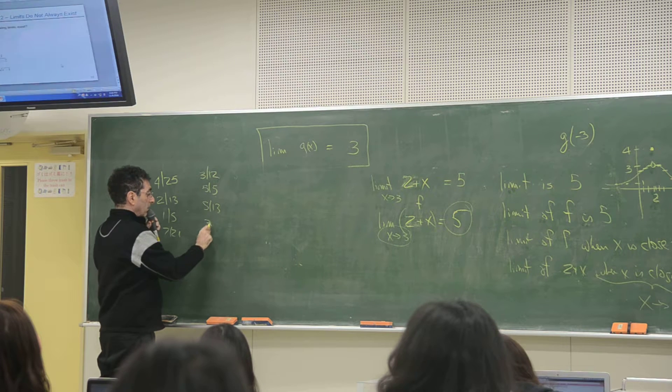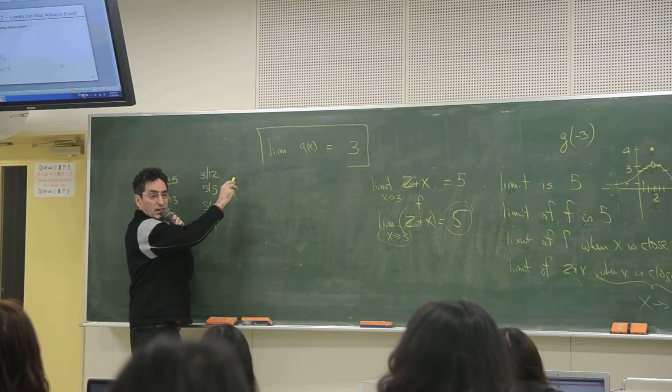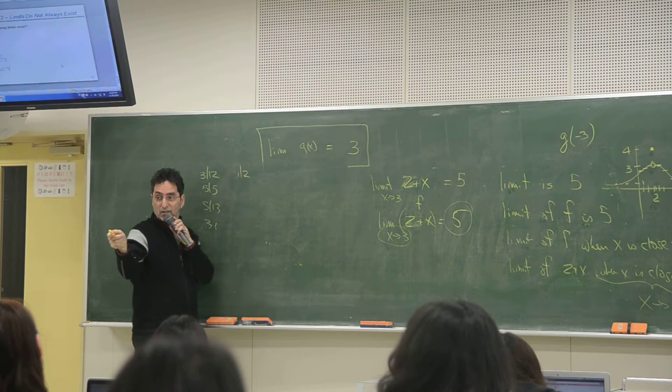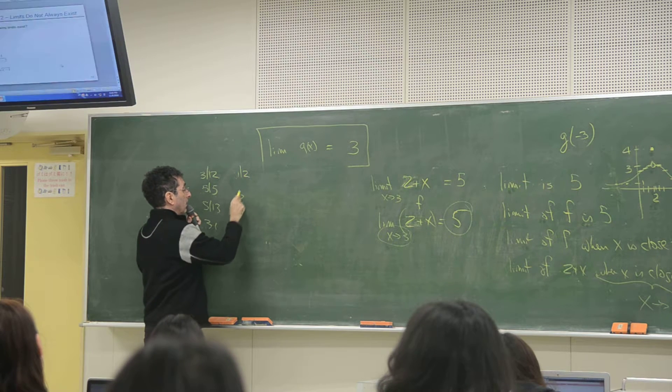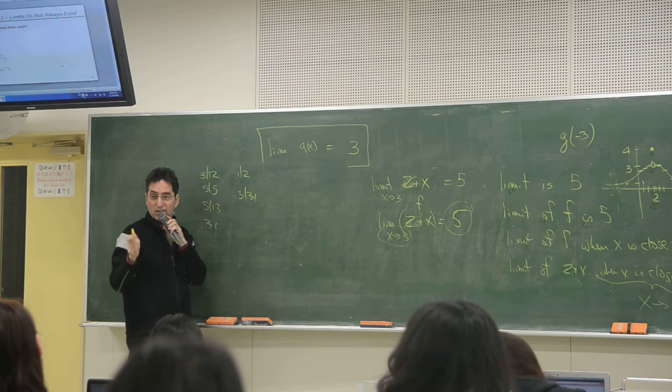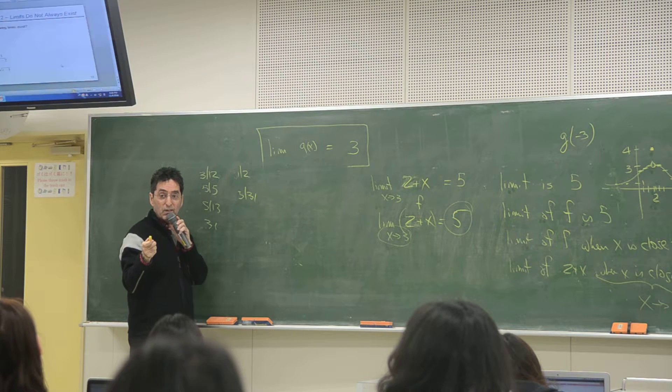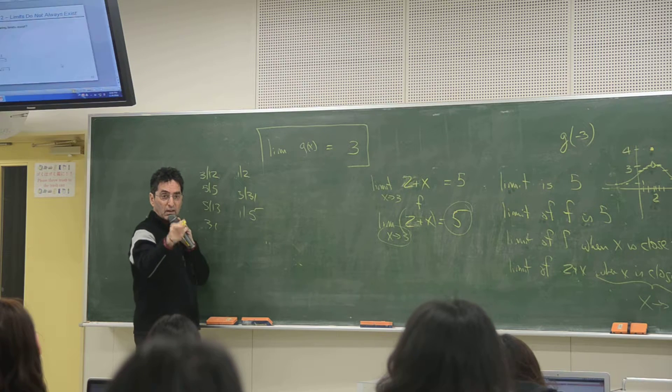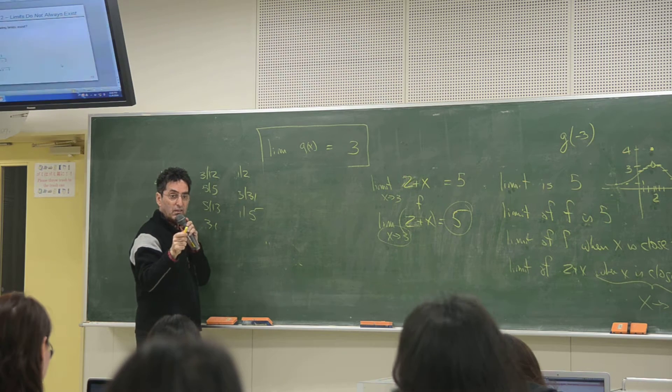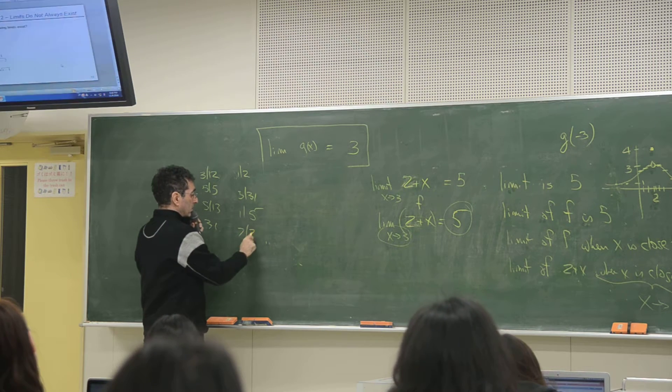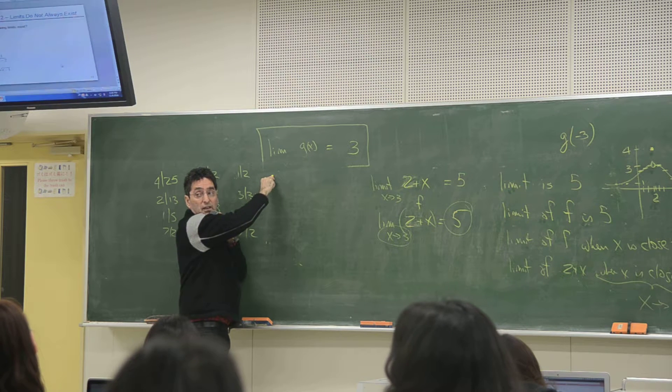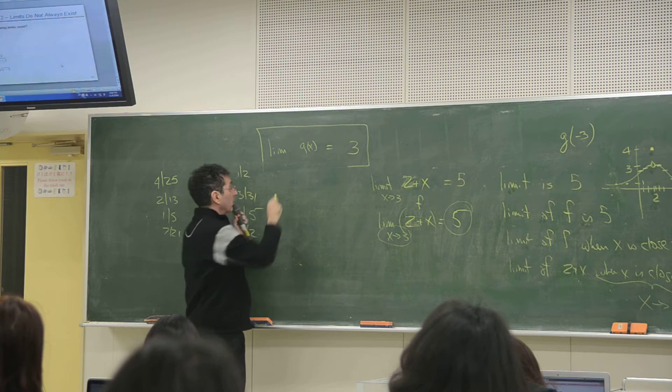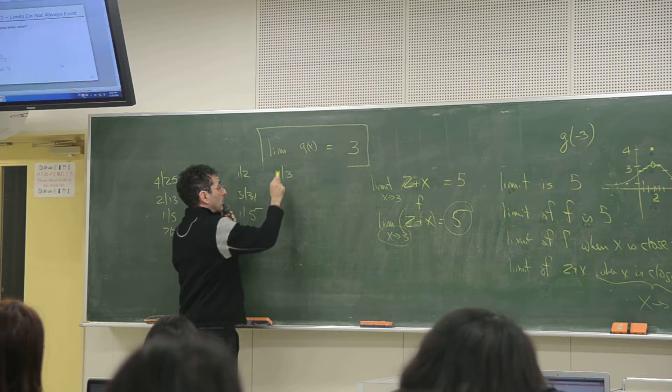Next person. Three, one. Next person. One, two. Next person. Five, 31. Next person. One, five. Next person. Seven, two. Next person. Eleven, three.